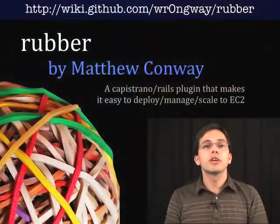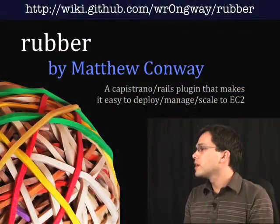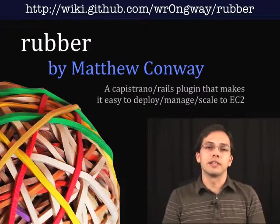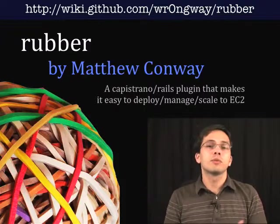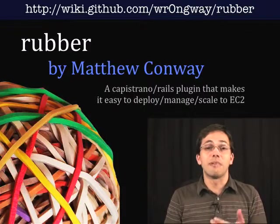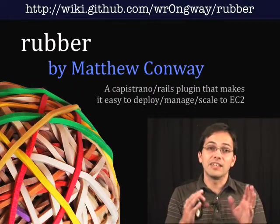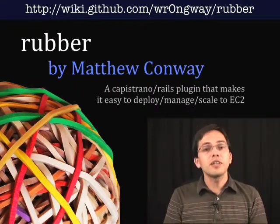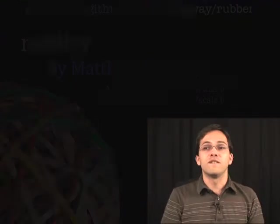First up, we're going to be taking a look at Rubber by Matthew Conway. Rubber is a Capistrano Rails plugin that makes it really easy to deploy your Rails application to EC2, manage it, and even scale it in a cluster. The first step once we install the plugin is to run the vulcanize command.